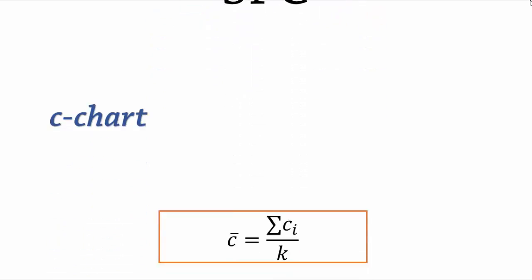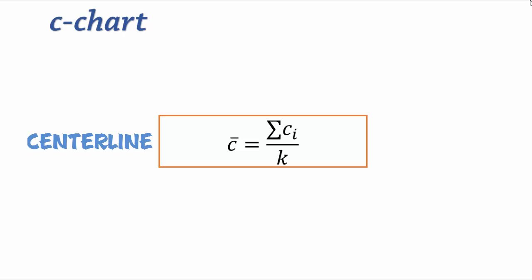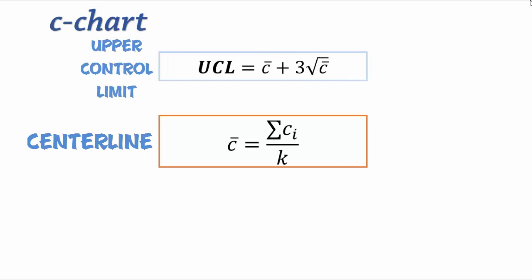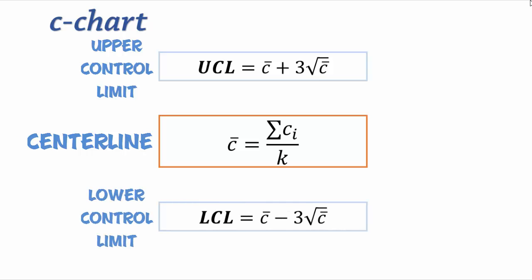The center line for this C-chart is C-bar, that is, the average number of non-conformers over a period of time. The upper control limit is C-bar plus 3 times square root of C-bar, while the lower control limit is C-bar minus 3 times square root of C-bar.